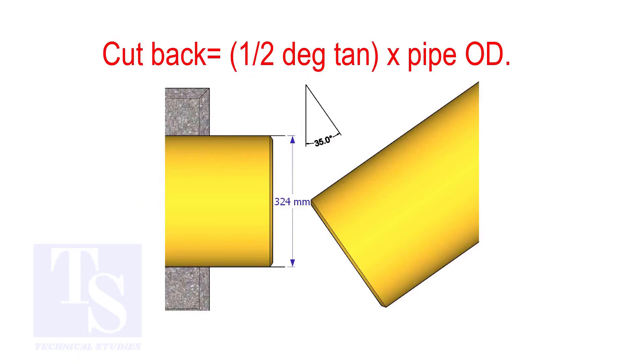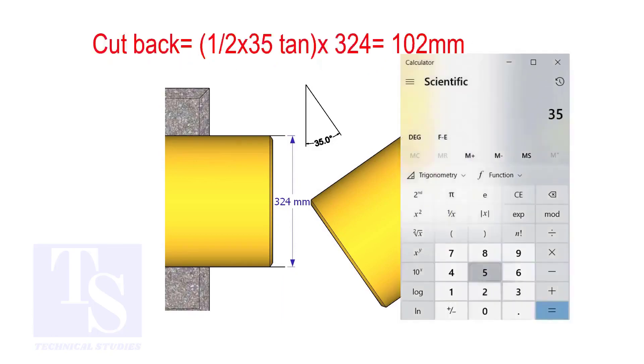When it is a single cut, the cutback is half degree tan multiplied by the OD of the pipe. The answer is 102 millimeters.